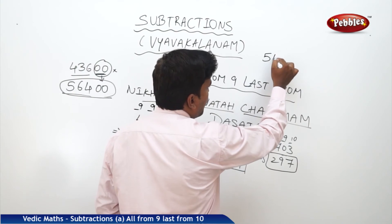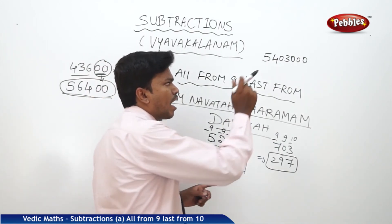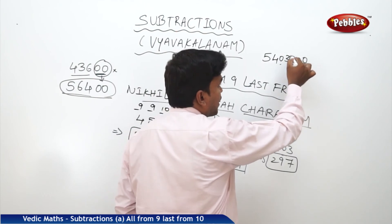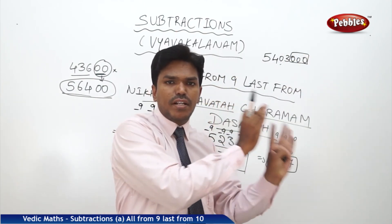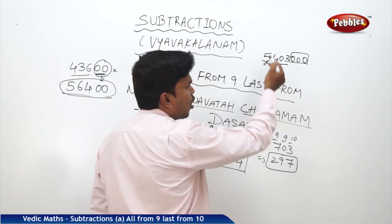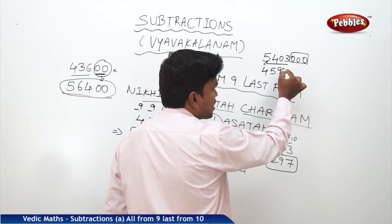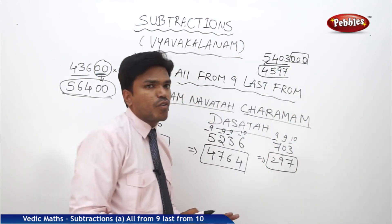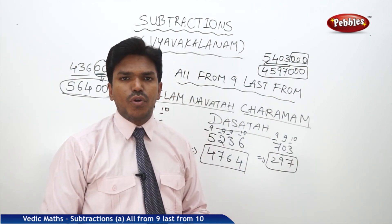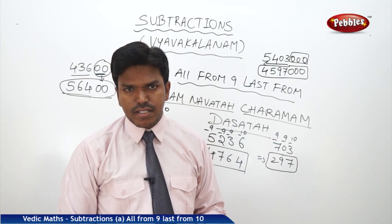Final example: 5403000. I am not talking about the zero which is in between non-zero digits — I mean zeros coming at the end, starting in the middle and continuing until the end. Ignore those trailing zeros. For 5403: nine minus five is four, nine minus four is five, nine minus zero is nine, and last from ten: ten minus three is seven — giving 4597. Drop the zeros: answer is 4597000. Now we will see one more part of the basics, that is vinculum.